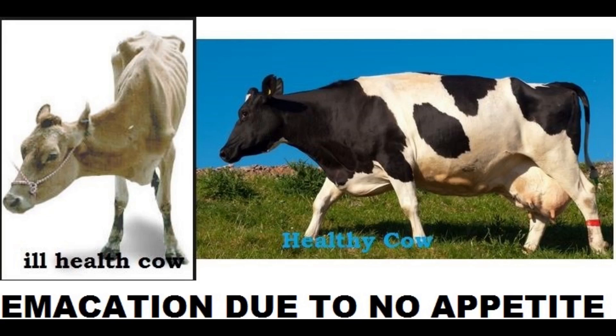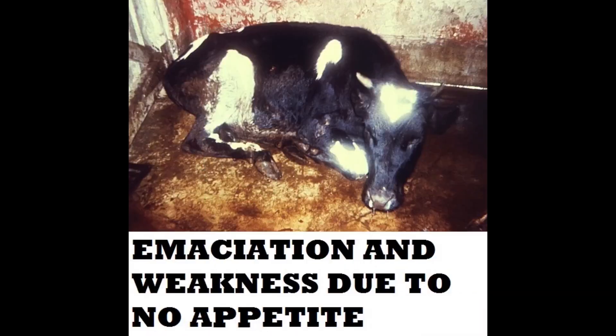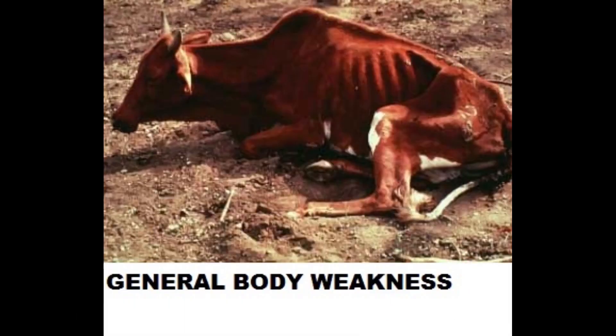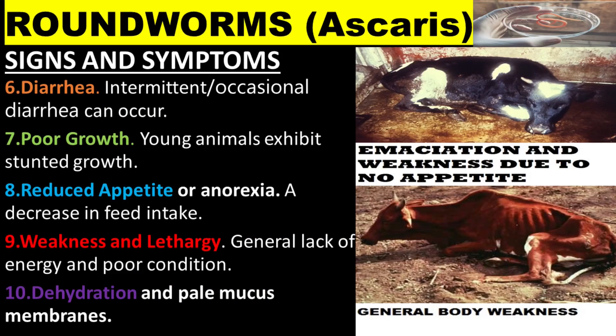Infected animals may lose weight. Intermittent or occasional diarrhea can occur. Poor growth — young animals exhibit stunted growth. Reduced appetite or anorexia. A decrease in feed intake. Weakness and lethargy — general lack of energy and poor condition. Dehydration and pale mucus membranes.